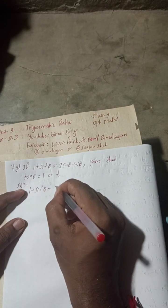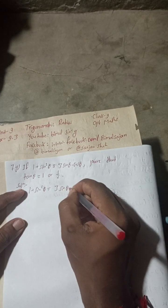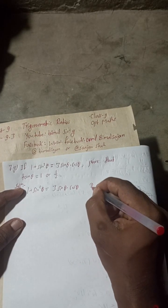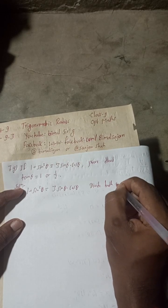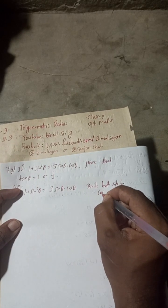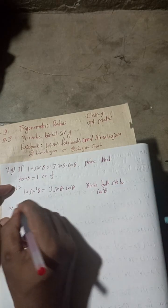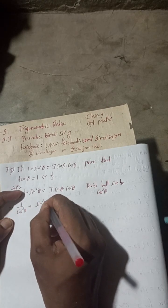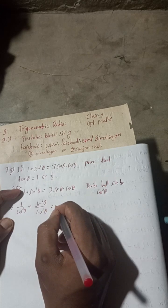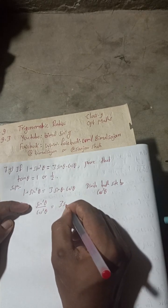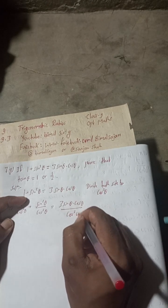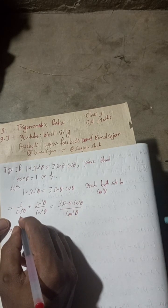Now divide both sides by cos squared theta. So this implies: one by cos²θ plus sin²θ by cos²θ is equal to three sine theta cos theta by cos squared theta.